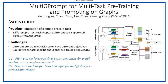Although there has been some initial exploration of prompt-based learning on graphs, they primarily leverage a single pretext task, resulting in a limited subset of general knowledge that could be learned from the pre-training data. To address the limitation of a single pretext task, this study aims to encompass a comprehensive range of knowledge from diverse pretext tasks.